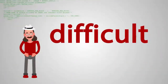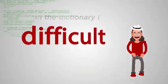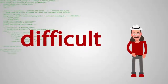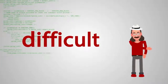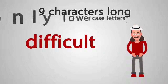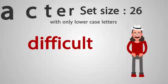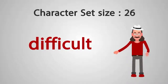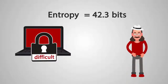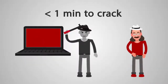Let's start with the word 'difficult.' Now this word is in the English dictionary, so more than likely it will fall victim to a dictionary attack in just a second or two. But looking at the overall entropy of the word 'difficult' — it's 9 characters long and uses only lowercase letters, giving it a character set size of 26. Plugging this into our equation, we get 42.3 bits of entropy. A typical laptop today can break a password with this level of entropy in under a minute.